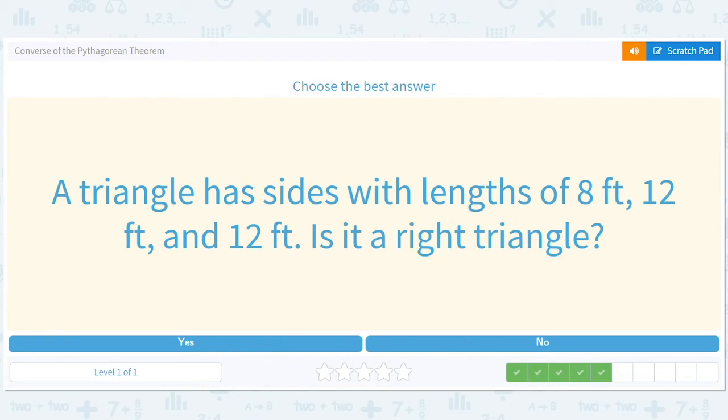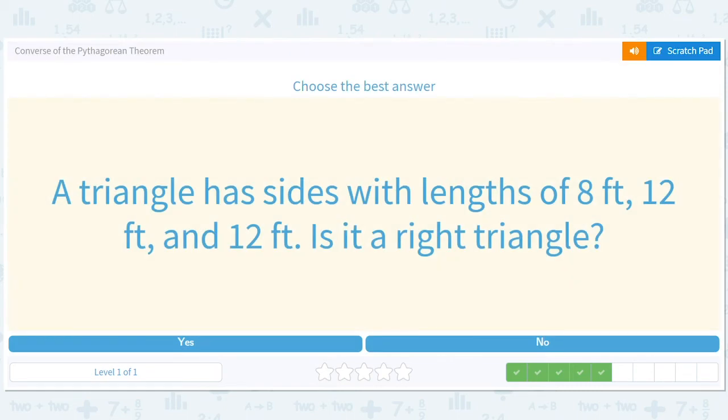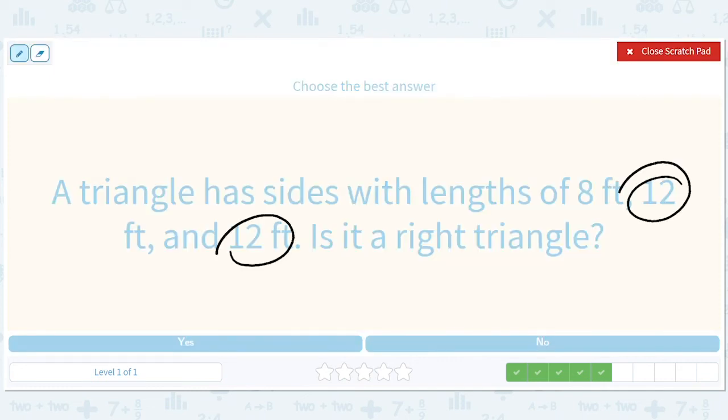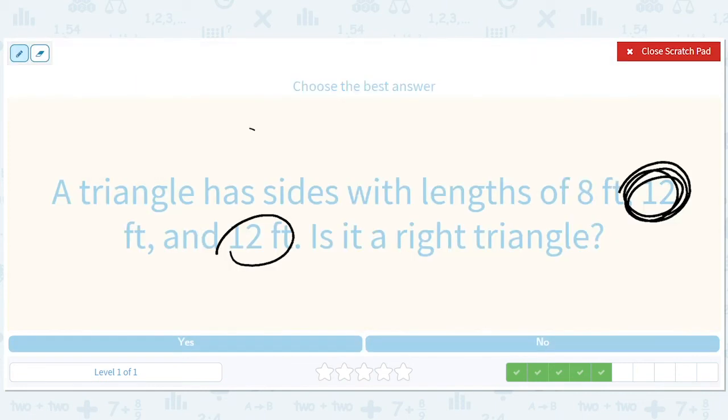A triangle has sides with length of 8 feet, 12 feet, and 12 feet. Well we already know this isn't going to be right if you just draw it out. There's another reason why it can't be right: you have to have a longest side in the right triangle. You can't have two longest sides in a right triangle. So if you did 8 squared, how could 8 squared plus 12 squared equal 12 squared? It just can't. You don't even have to do this out.